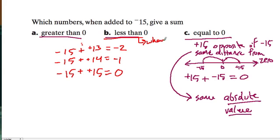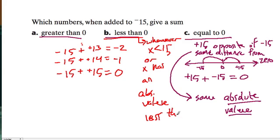So I'm going to say whenever x, we can call all these numbers x, is less than 15, anything less than 15, or x has an absolute value less than negative 15. So whenever the absolute value is less than negative 15, or you could say positive 15, either way. Whenever the distance from zero is less than 15.